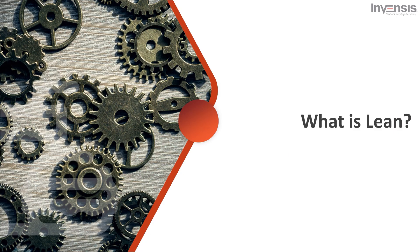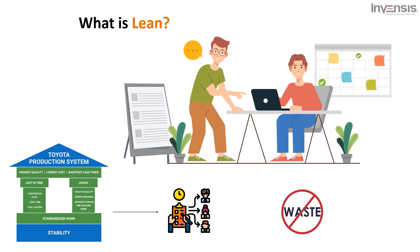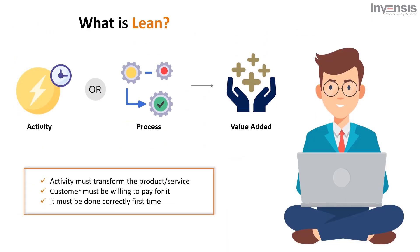Lean is a management philosophy derived from the Toyota production system. It fosters a culture of continuous improvement, maximizing value and minimizing waste, by focusing on a flow of high-value-added activities or processes. The key concept of Lean is the elimination of waste. Waste can be defined as anything that doesn't add value to the customer. An activity or process is only value-added when three conditions are met: the activity must transform the product or service, the customer is willing to pay for it, and it must be done correctly the first time.